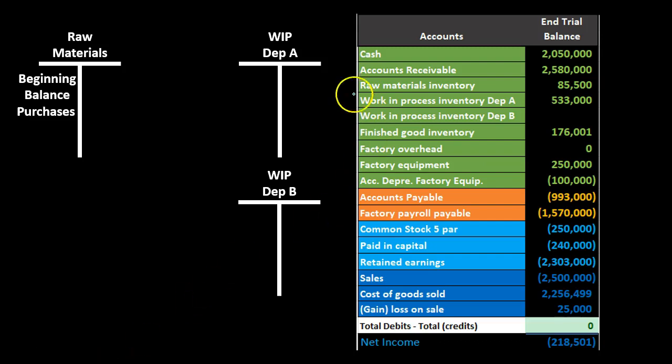Both systems start with raw materials that are converted to finished goods, making them different from a merchandising company, which simply purchases and sells goods with no processing. Here, we have raw materials that are converted through direct labor and overhead to arrive at finished goods.